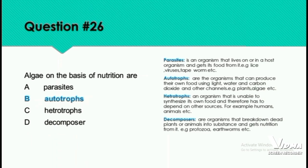Question 26: On the basis of nutrition, algae are — parasites, autotrophs, heterotrophs, or decomposers? Algae are autotrophs. A parasite is an organism that lives on or in a host organism and gets its food from it — for example, lice, viruses, tapeworms. Autotrophs are independent; they prepare their own food using light, water, and carbon dioxide. Plants are autotrophs because they prepare their own food.